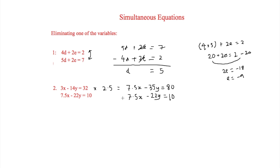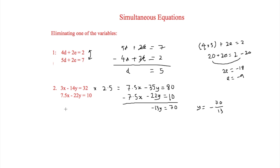The numbers are a bit awkward so it's best to leave them in fractions. Subtracting: minus 35y minus (minus 22y) gives minus 35y plus 22y, which is minus 13y, equal to 80 minus 10, so minus 13y equals 70. Rather than working in decimals, we leave y as 70 divided by minus 13, so y equals minus 70 over 13.